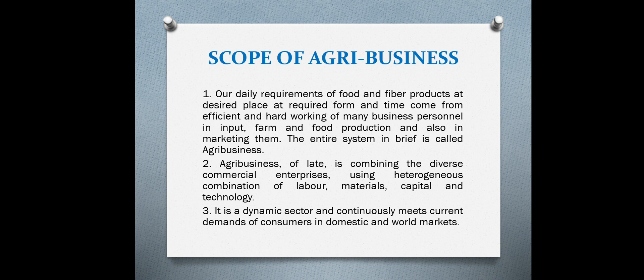Agribusiness is a wider term. It includes backward linkages, actual production, and all activities after harvesting until the product reaches the final consumer. All three sectors have huge scope. Our day-to-day requirement of food and fiber products can be fulfilled by agribusiness — when inputs reach the farmer at the right time, the farmer can take production, and after production it can reach the final consumer.